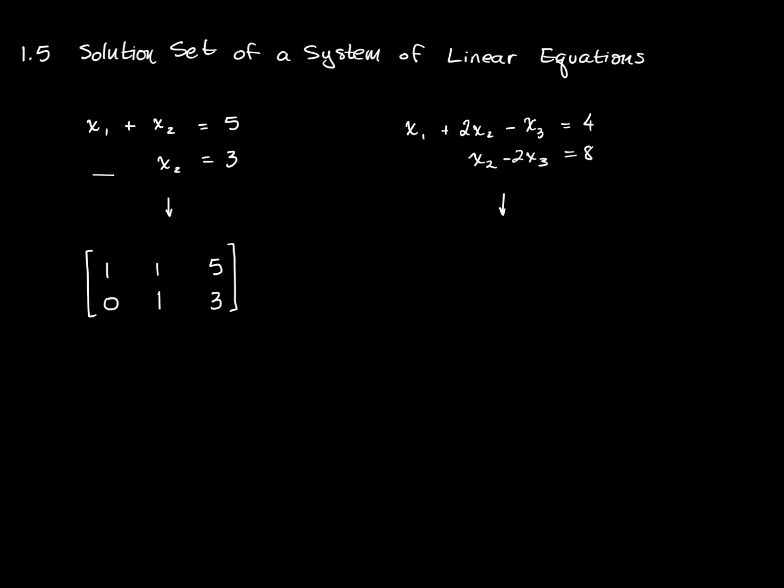This second system of equations has a matrix 1, 2, negative 1, 4, and 0, 1, negative 2, 8. And I've chosen these two systems, these two matrices, because they're already in echelon form.